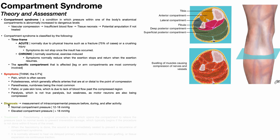The diagnosis of compartment syndrome is based on a few things: number one, a good subjective examination; number two, a good objective examination where you're likely to pick up some of those five Ps; and number three, a measurement of intracompartmental pressure before, during, and after activity. A normal compartment pressure is anywhere between 12 and 18 millimeters of mercury, so anything greater than 18 mmHg indicates compartment syndrome.